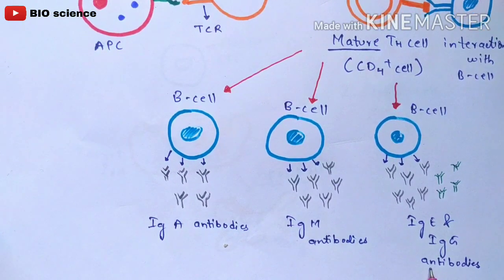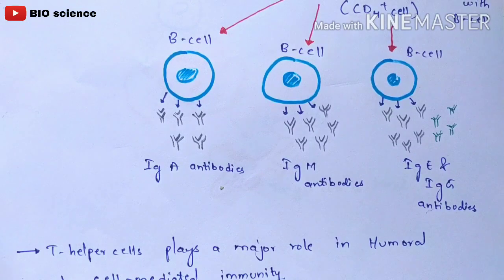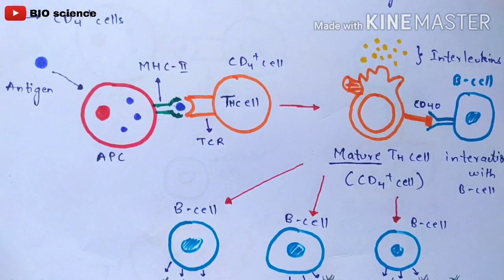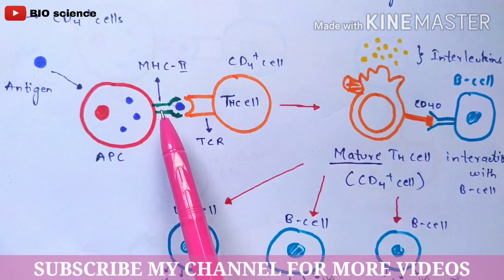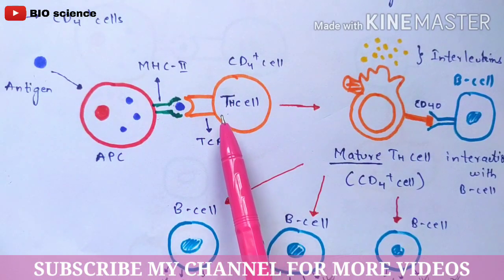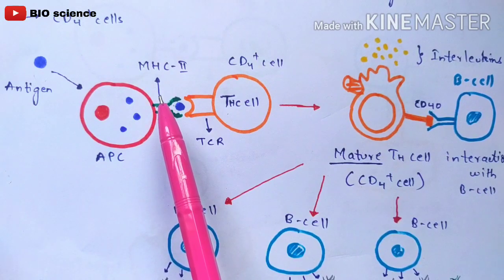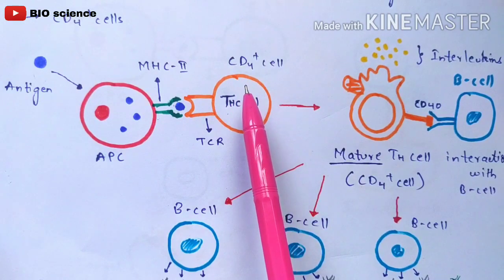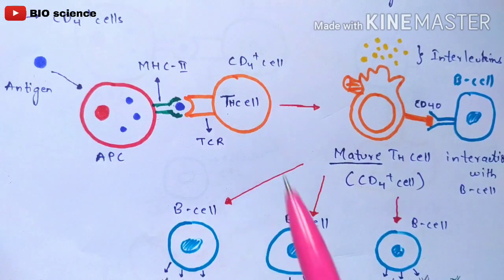T helper cells play a major role in both humoral and cell-mediated immunity — links to those videos are in the description. An important point to remember: if an antigen presenting cell has MHC class 2 molecules, it can only bind to CD4 plus cells (T helper cells). There are two types of T cells — CD4 plus (helper) and CD8 plus (cytotoxic T cells) — and two classes of MHC molecules, each binding to the corresponding T cell type. Now we will discuss cytotoxic T cells.